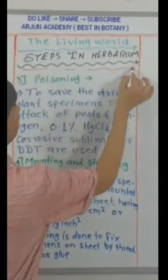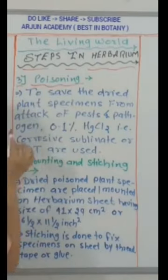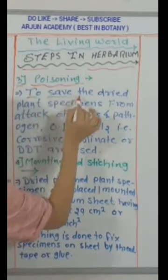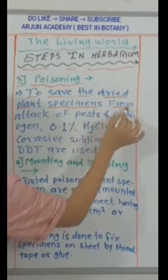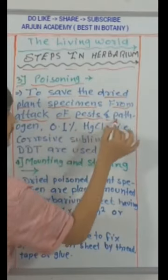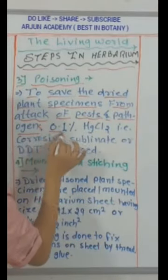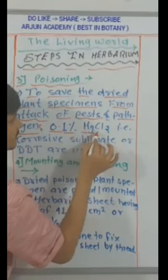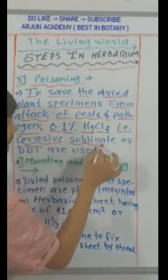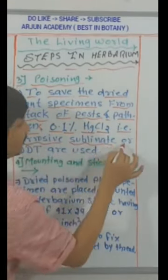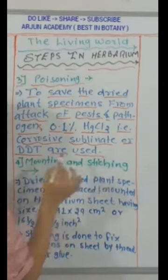Number 3: Poisoning. To save the dried plant specimens from attack of pests and pathogens, 0.1% HgCl₂ (corrosive sublimate) or DDT are used.